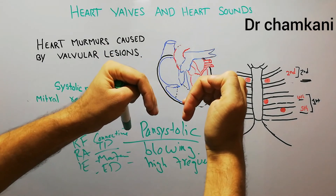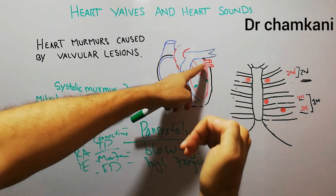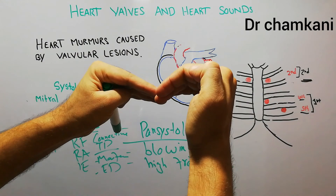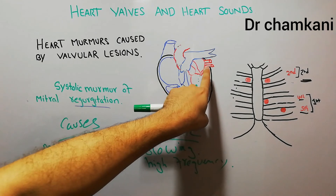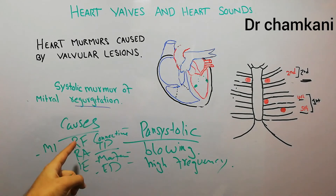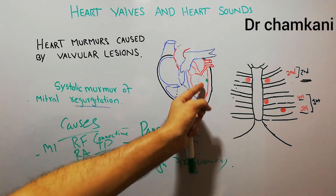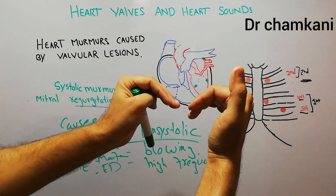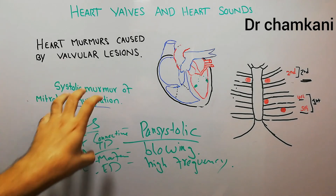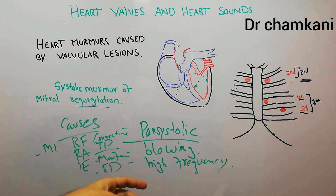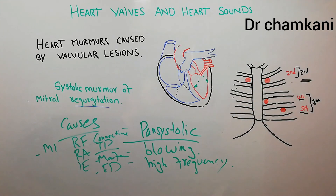Normally the valve allows movement of blood during contraction of the left atrium and permits blood to move from the left atrium into the left ventricle. But when the left ventricle is contracting, it closes and does not allow blood to move from the left ventricle into the left atrium. When there is damage to this valve — due to rheumatic fever, rheumatoid arthritis, infective endocarditis, myocardial infarction, or rupture of the supporting muscles — blood moves from the left ventricle into the left atrium, and this extra sound is heard throughout systole, blowing in nature, high frequency, best heard in the mitral area and radiating into the axilla.